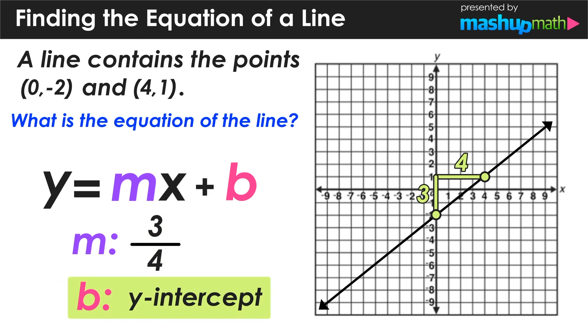The last thing that we need to find out is the value of the y-intercept, which is where the line crosses the y-axis. We can see that it crosses the y-axis at negative 2, and that should make sense because we know that the line passes through the point 0, negative 2, and we can conclude that our y-intercept is negative 2.